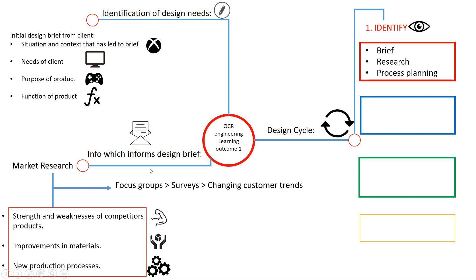This links back to your researching sections. Ways in which we can research include focus groups, surveys, and changing customer trends. We can look at strengths and weaknesses of competitors' products by doing a product analysis using ACCESS FM, finding out what the good and bad things are, and then integrating those into our product. Any improved materials or manufacturing processes that could be used would also be beneficial.